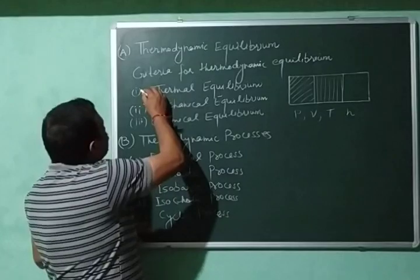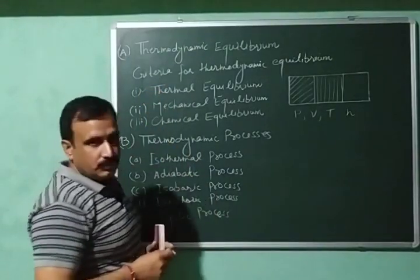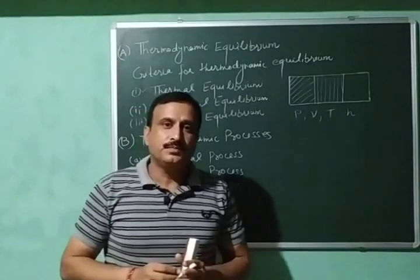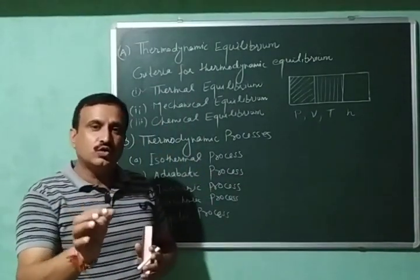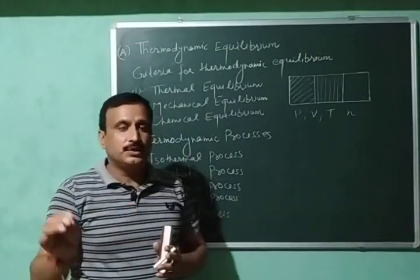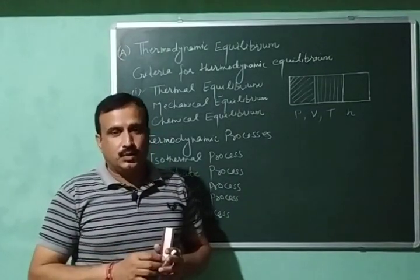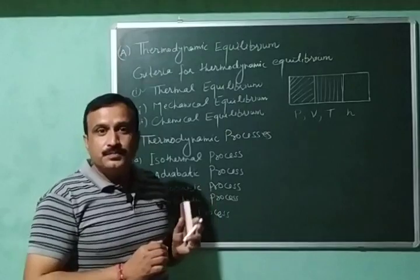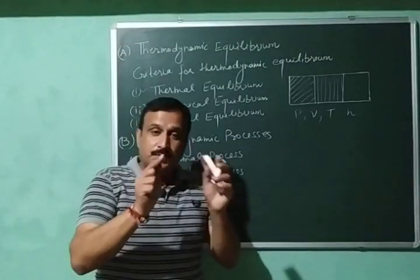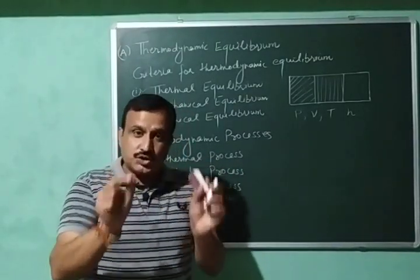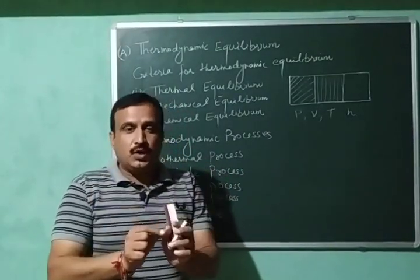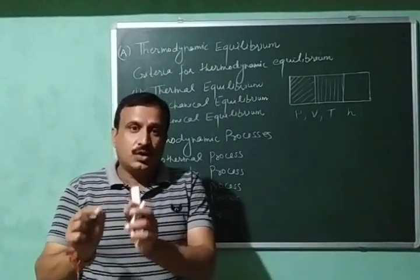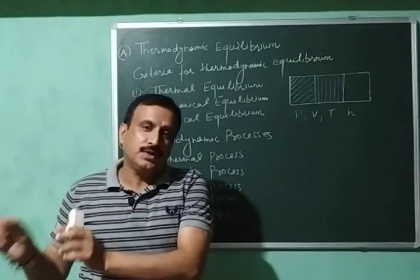First, thermal equilibrium. A system is said to be in thermal equilibrium if no heat flows from one part of the system to the other part. This means that for this type of equilibrium, the temperature should remain constant throughout the system, or temperature should be the same in all phases or in all parts of the system.